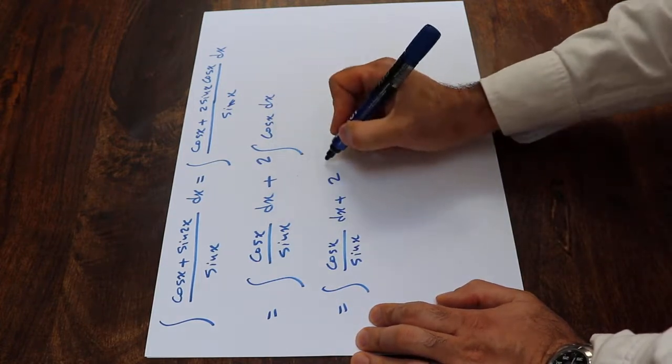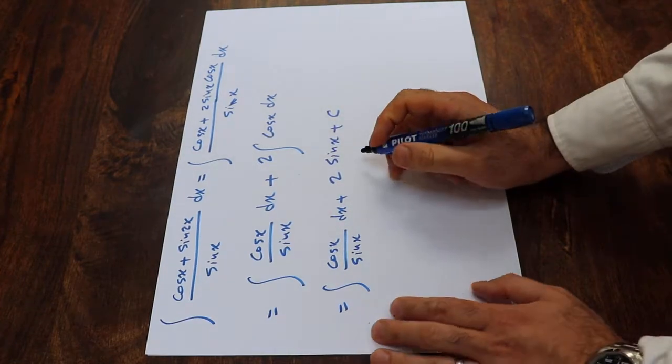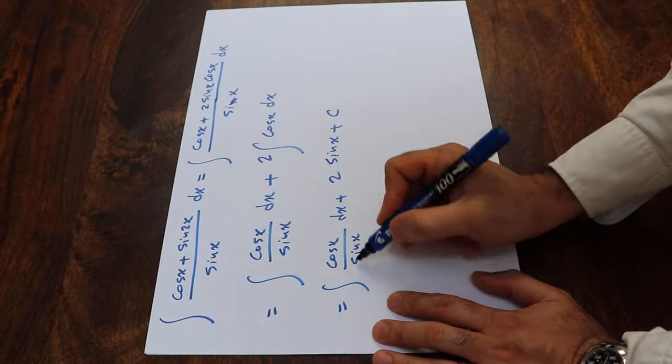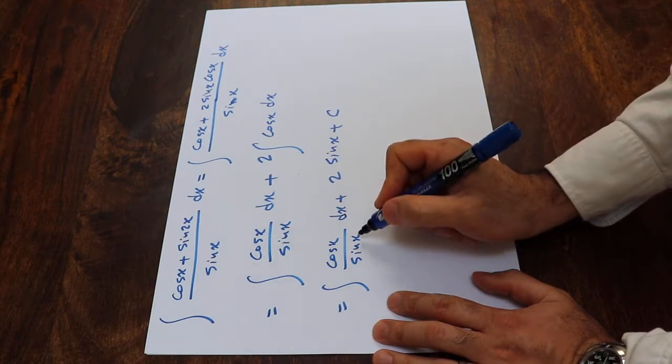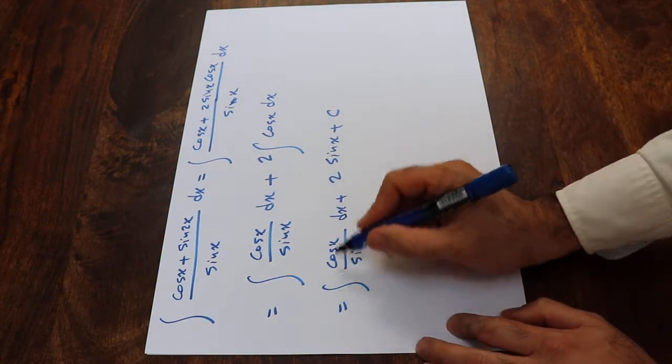From table of integrals, we know it is equal to sine x plus c. Here, this is basically integral of cotangent x, and you can find the answer in the table of integrals, or we can simply calculate this integral.